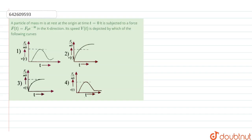Fellow students, we have a question. A particle of mass M is at rest at the origin at time t equal to 0. It is subjected to a force F(t) which is equal to F0 e^(−Bt) in the x direction. Its speed V as a function of time is depicted by which of the following curves?